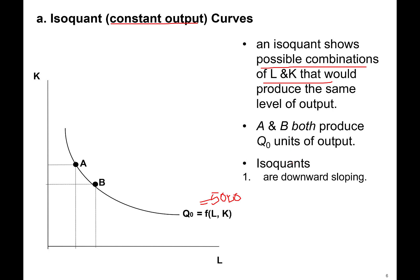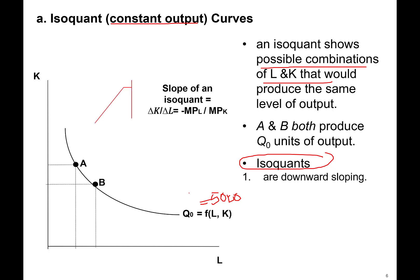What are the properties of isoquants? They are downward sloping. That means if you use more labor, you can use fewer units of capital and still produce the same output. The slope of the isoquant is delta K over delta L at any given segment — that is rise over run.